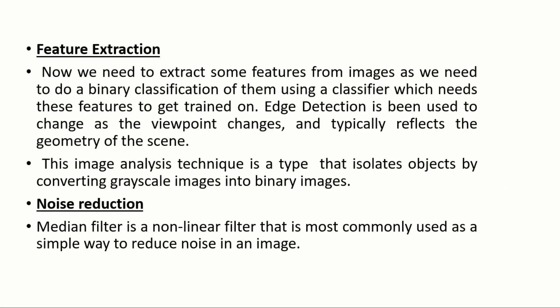In feature extraction, we need to extract some features from images to perform a binary classification using a classifier, which needs these features to get trained on. S-detection is used to handle viewpoint changes and typically reflects the geometry of the scene. In feature extraction, we use an image analyzing technique that isolates objects by converting grayscale images into binary scale images. The grayscale image is converted into black-to-white and white-to-black colors using the concept of threshold in Python.